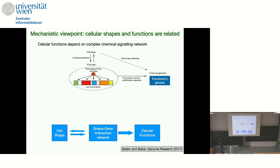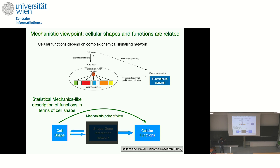Another aspect we are exploring is whether we can describe cellular functions in terms of cell shape. The idea is that cellular functions must originate from different biochemical signaling networks, which are very complex to describe analytically. But this biochemical signaling network controls both the cellular function and the cell shape. So the idea is: can we treat this gene interaction network and develop a statistical mechanics-like description of function in terms of cell shape?